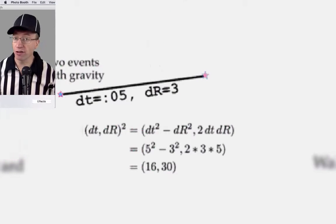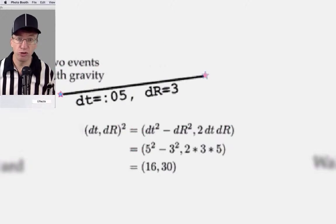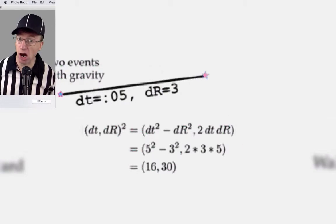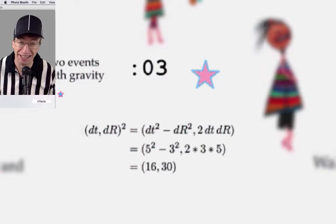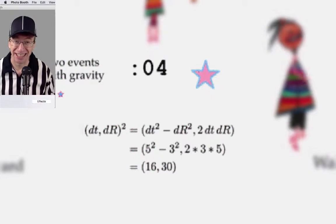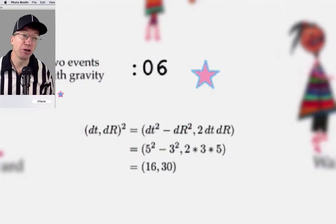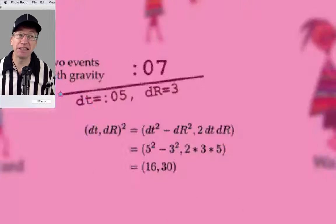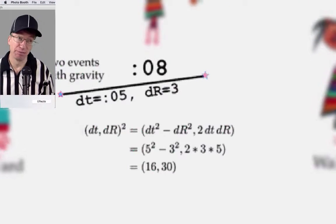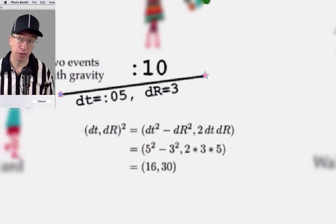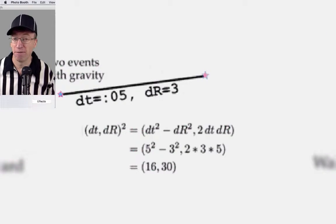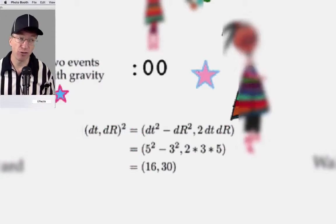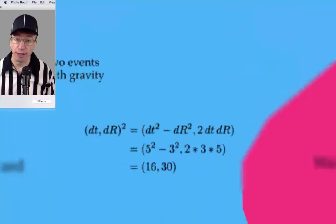The other term is 2·dt·dr — it doesn't even have a name in standard physics, so I had to make one up. I called it space-times-time. It's 2 times 3 times 5, which equals 30.